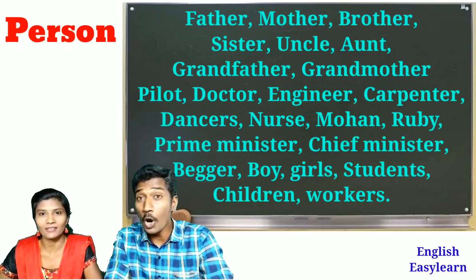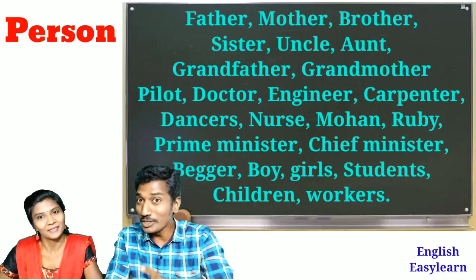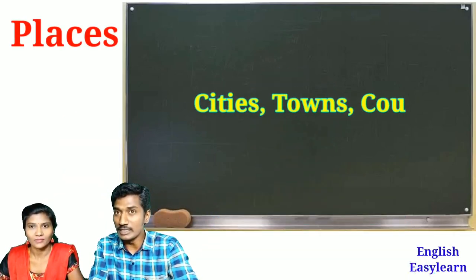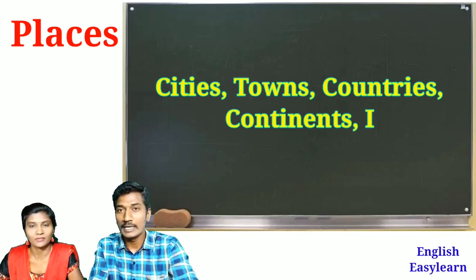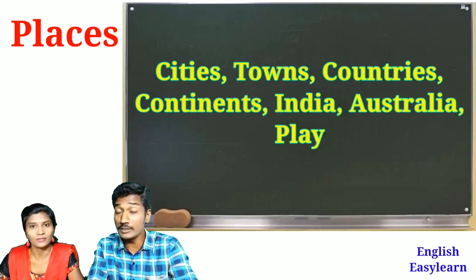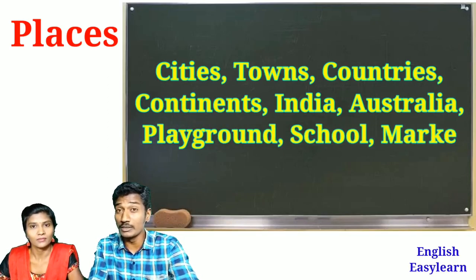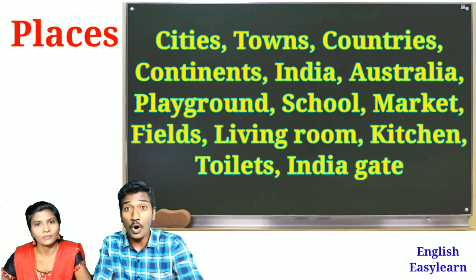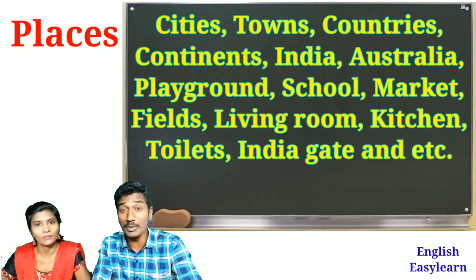Also boy, girls, students, children, workers, commander — all these are persons. Can you list out places? Of course — places like cities, towns, countries, continents. Particularly we can also say India, Australia, playground — all kinds of places.